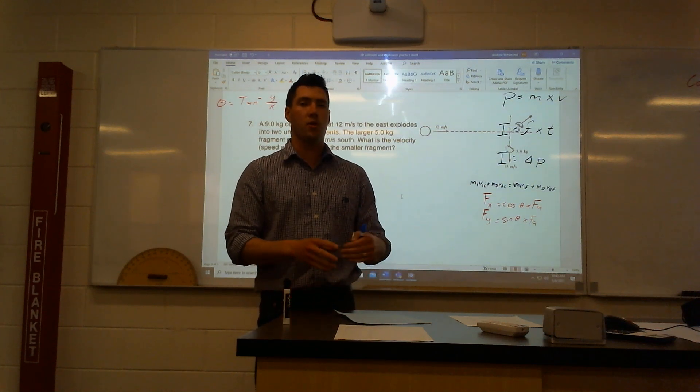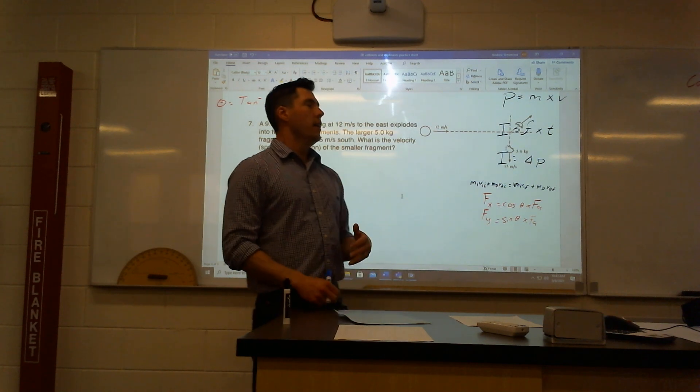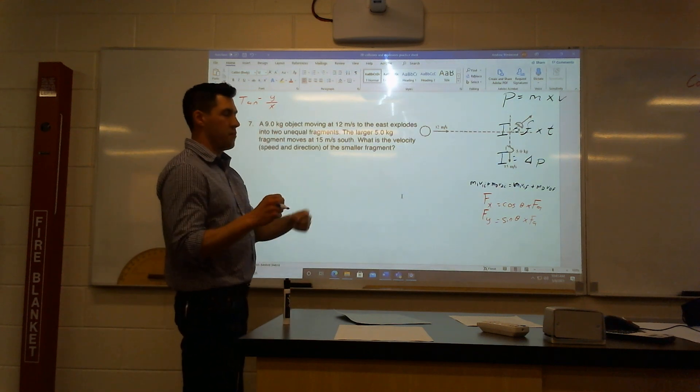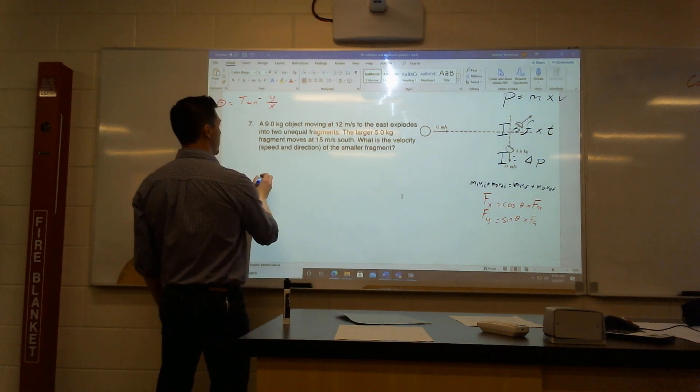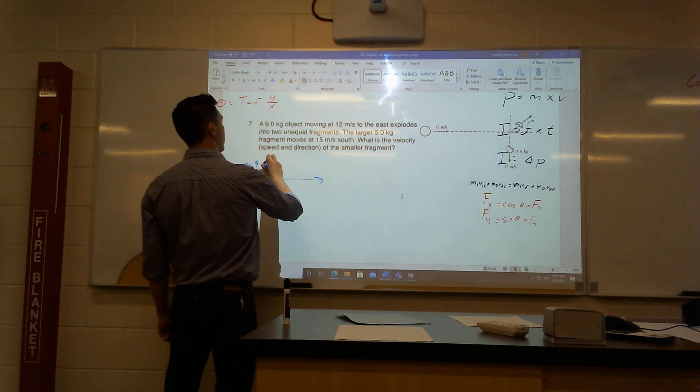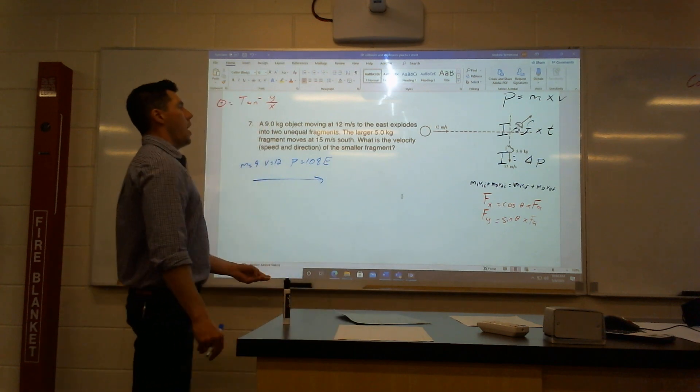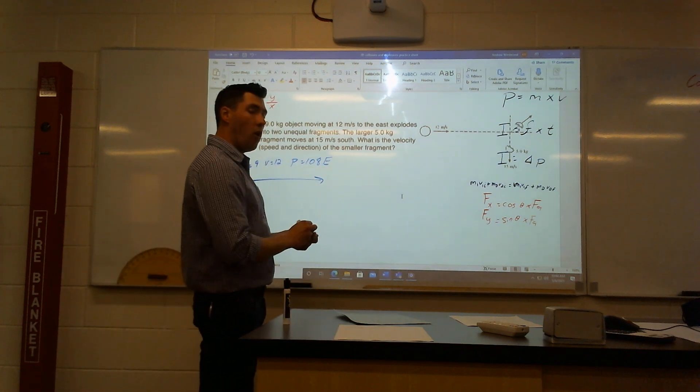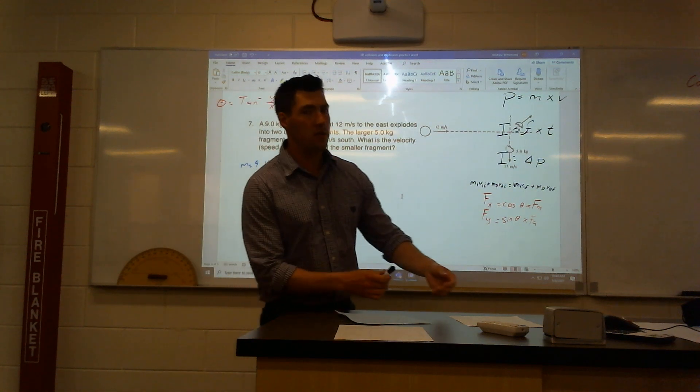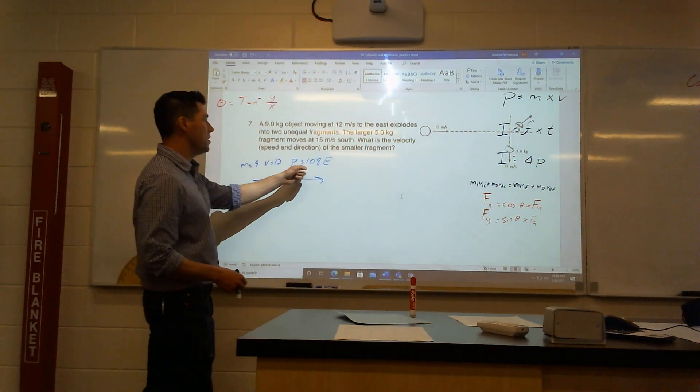There was a question earlier that Mr. West was on a skateboard. Technically when I jumped off a skateboard, I created like an explosion. Me and the skateboard were together, and then two pieces went different directions. This is a more typical type of explosion where something actually explodes into different pieces. At the beginning, we had something moving east, mass of nine, velocity of 12, momentum of 108 east. That is the momentum beforehand. That also has to be the momentum afterwards.